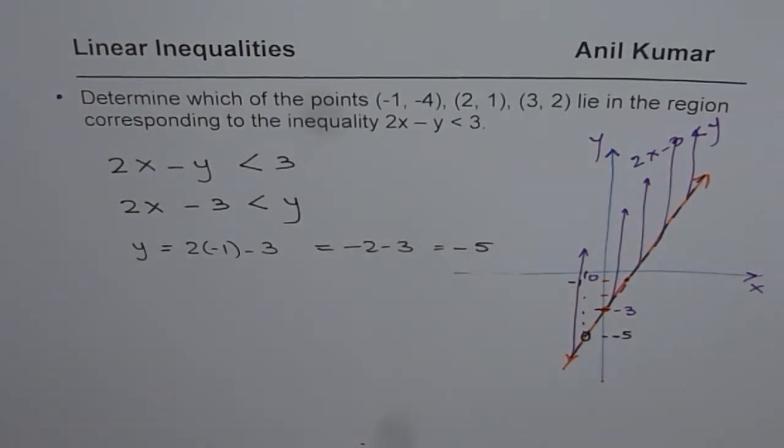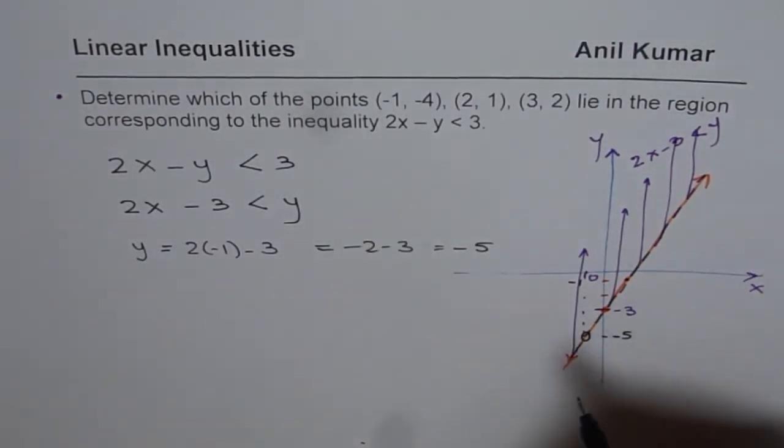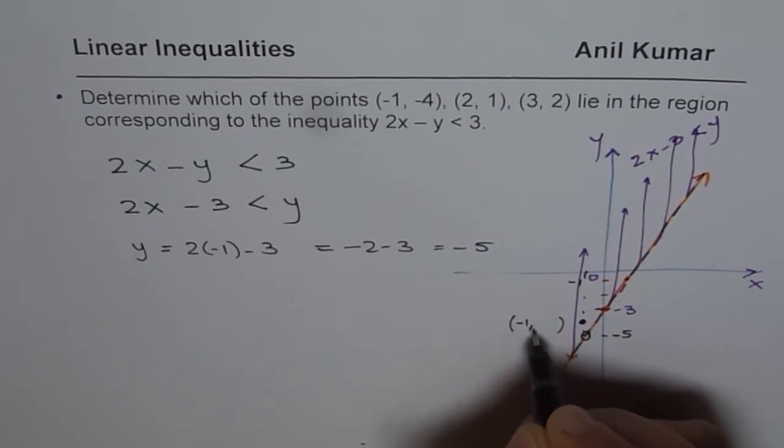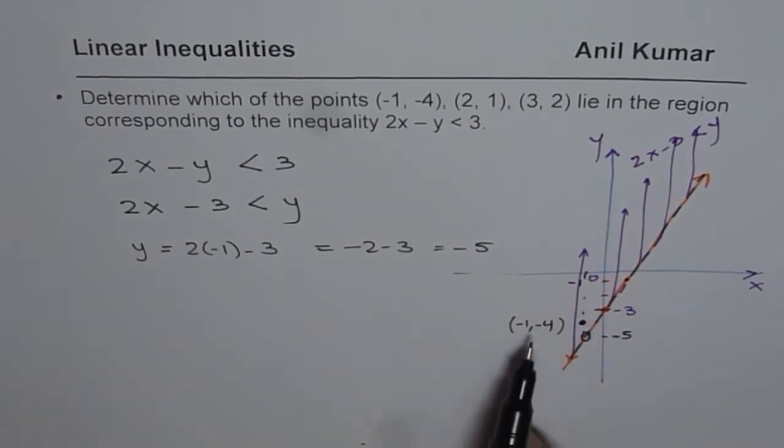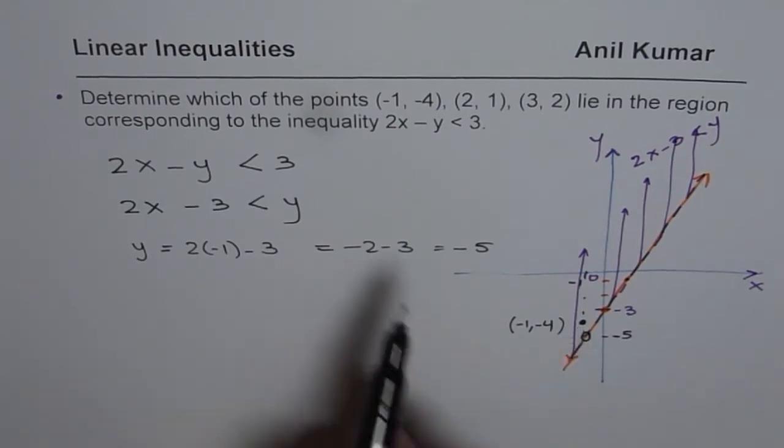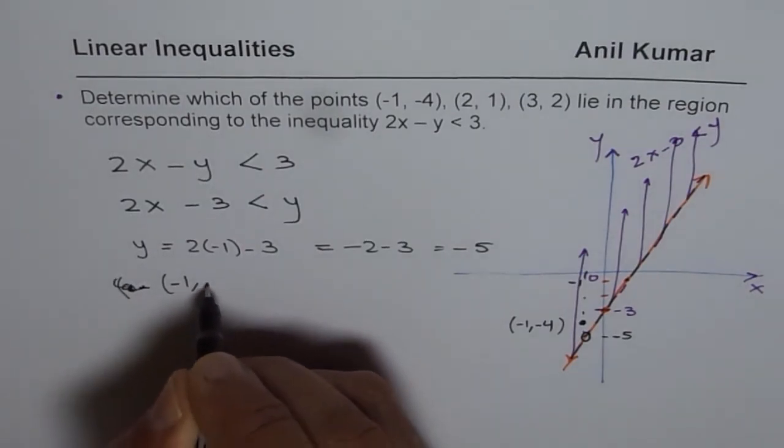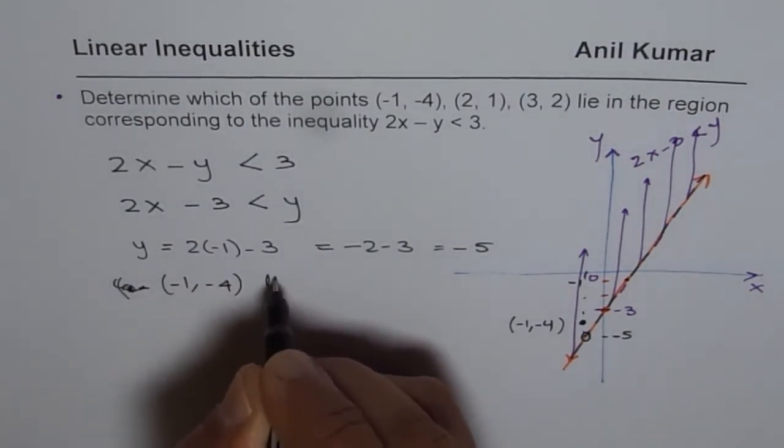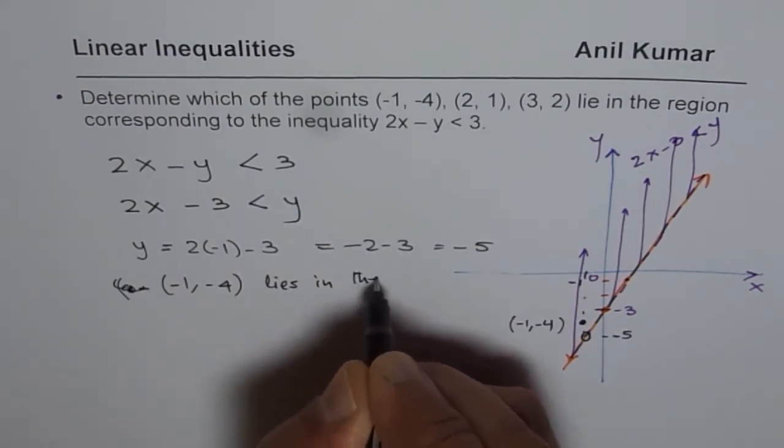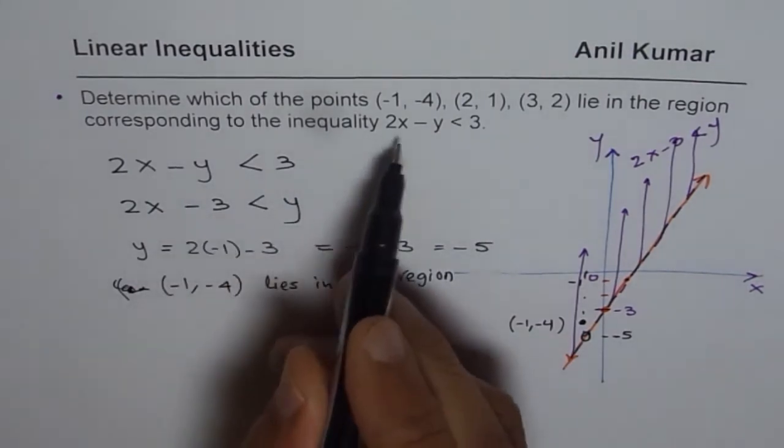If you have a point which is (-1, -4), that means this point is kind of here. This point is (-1, -4). Clearly, you can see this point is above the line. So, therefore, (-1, -4) lies in the region of this inequality.